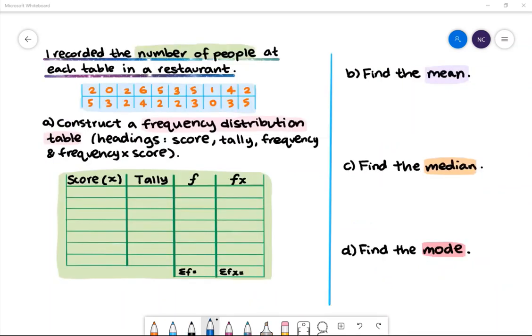Let's take a look at this example. I recorded the number of people at each table in a restaurant. The values are in this table. Part A: Construct a frequency distribution table. Use the headings score, tally, frequency, and frequency multiplied by score.